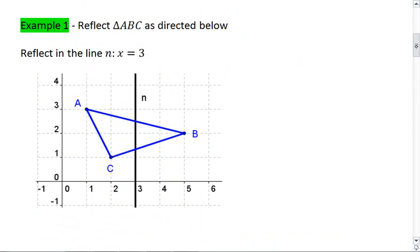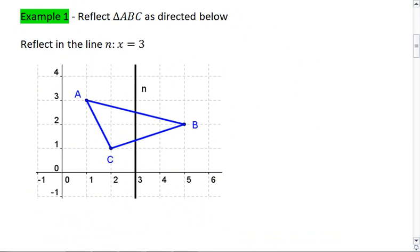What we want to do is reflect A, B, C as directed below. So we're going to reflect this shape in the line X equals 3. And we have that line of reflection right here in yellow.